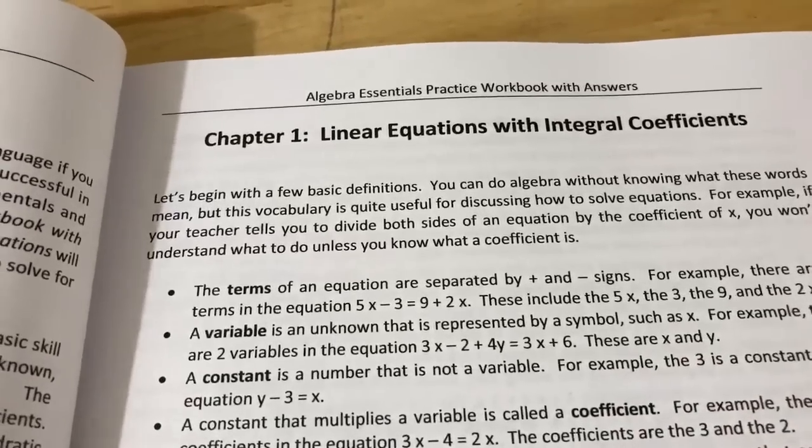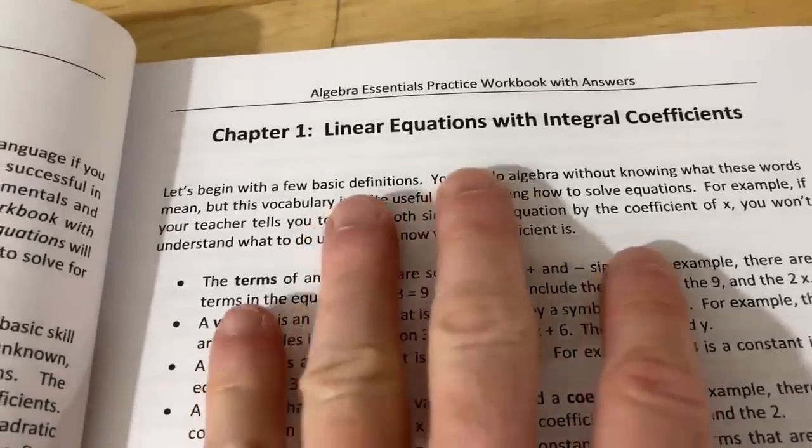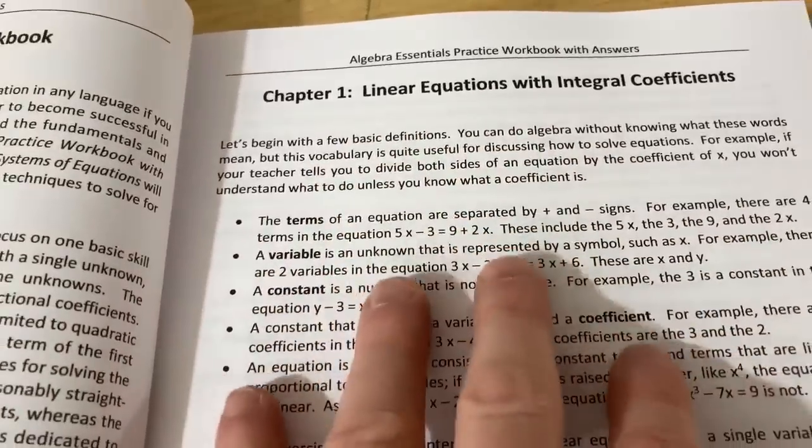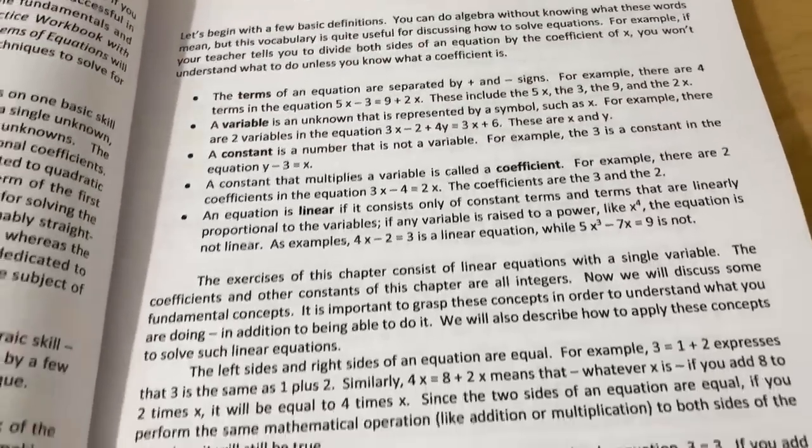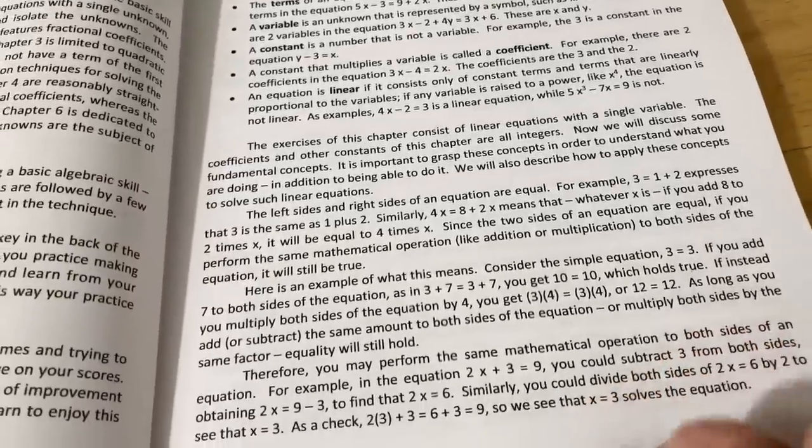Let's talk about how this book is actually laid out. So in each chapter you have some mathematical explanations and examples. So chapter one is on linear equations with integral coefficients. So it goes through and it explains everything very, very carefully.